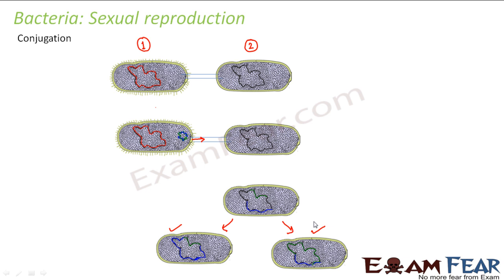Now if you see, we started with organisms like bacteria one and bacteria two, but what we got is neither exactly similar to one nor exactly similar to two — it is a combination of both. In asexual reproduction by fission, the daughter organism formed was genetically identical to the parent. But in conjugation, the new bacteria formed have a different genetic combination compared to the parents. This is how reproduction happens in bacteria.